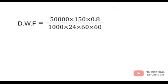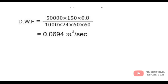DWF equals 50,000 into 150, the water supply, and 80 emerges as sewage, then divided by 1000 into 24 into 60 into 60. We get the answer: the DWF is 0.0694 meter cube per second.